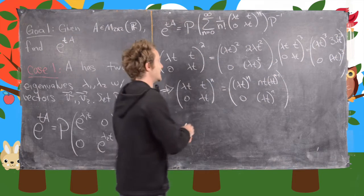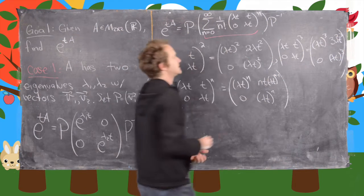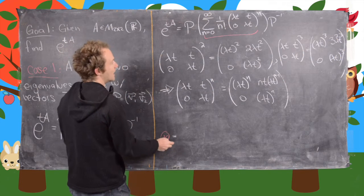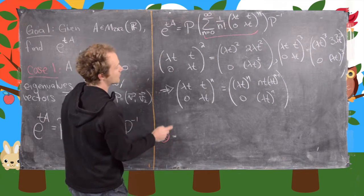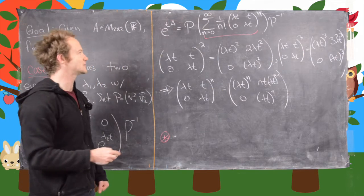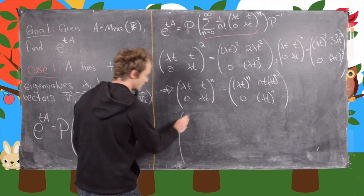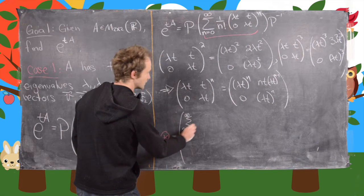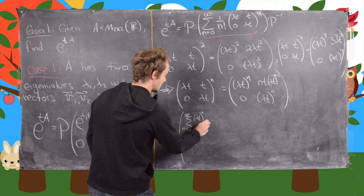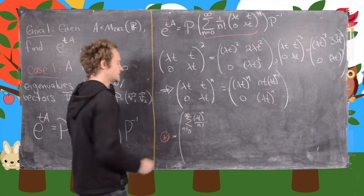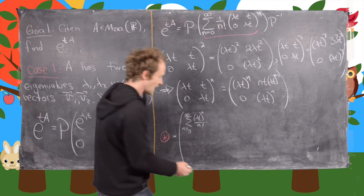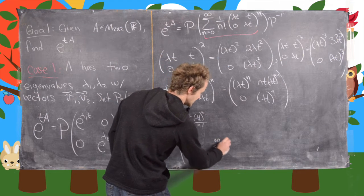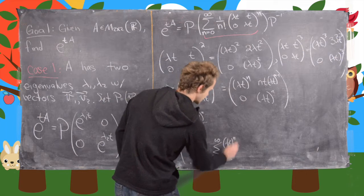Let's look at the inside sum and see if we can calculate that. Let's bring the sum inside the matrix. In the upper left and lower right spots, we have the sum from n equals 0 to infinity of (lambda T) to the n over n factorial. That should look pretty familiar — that's E to the lambda T. And then we have the same thing down here.